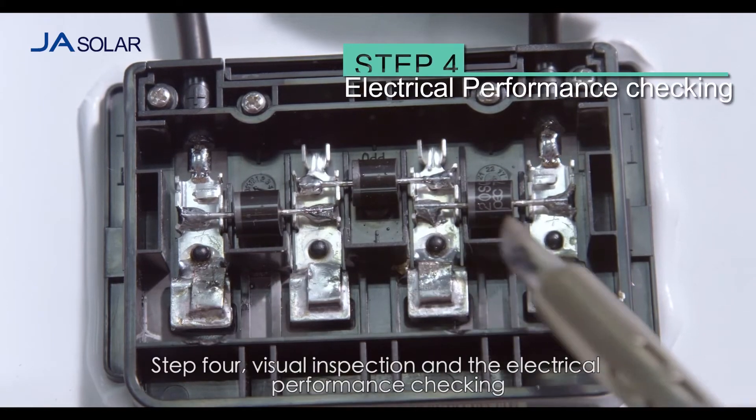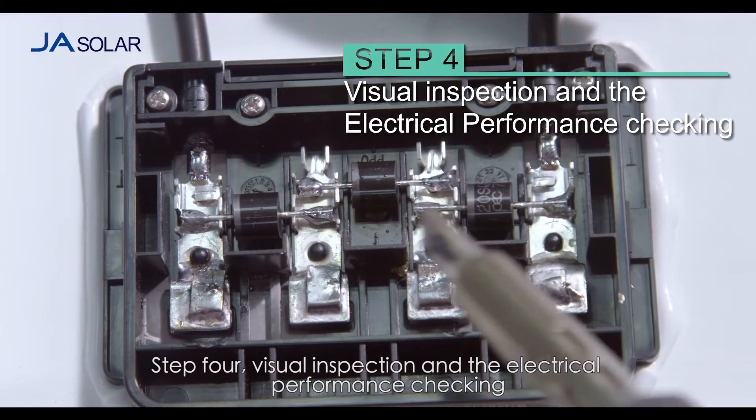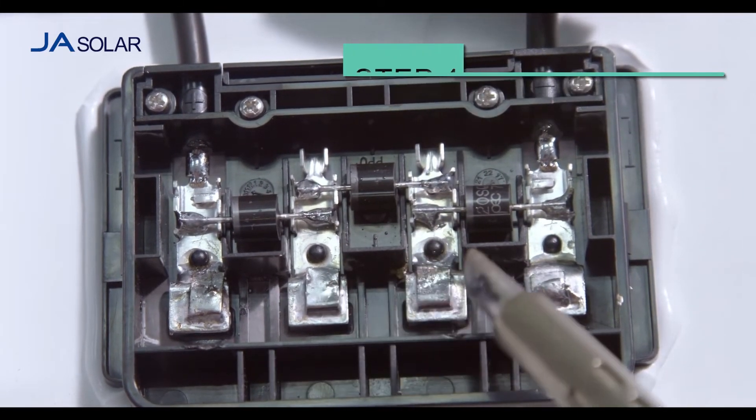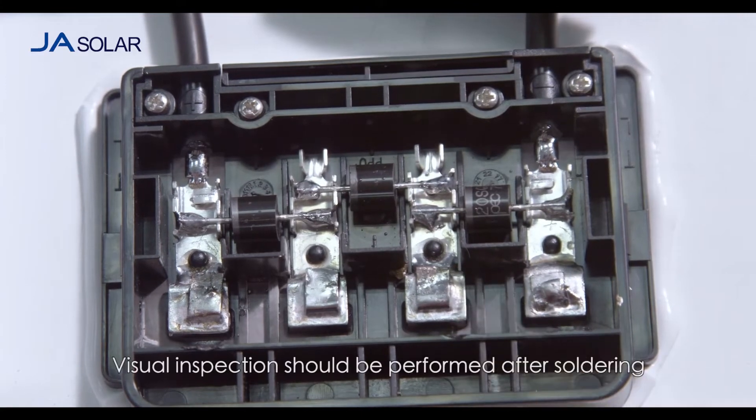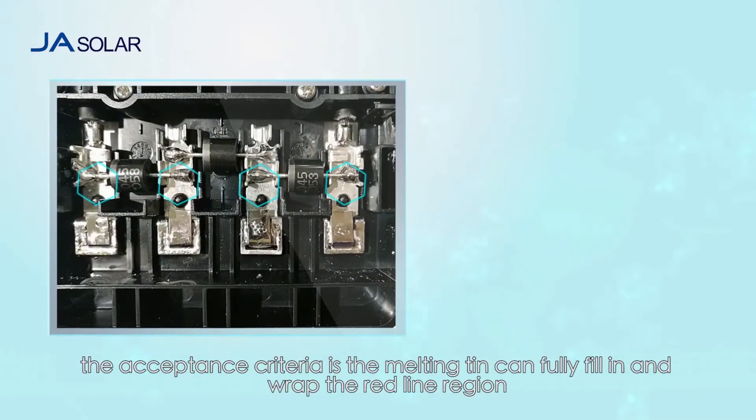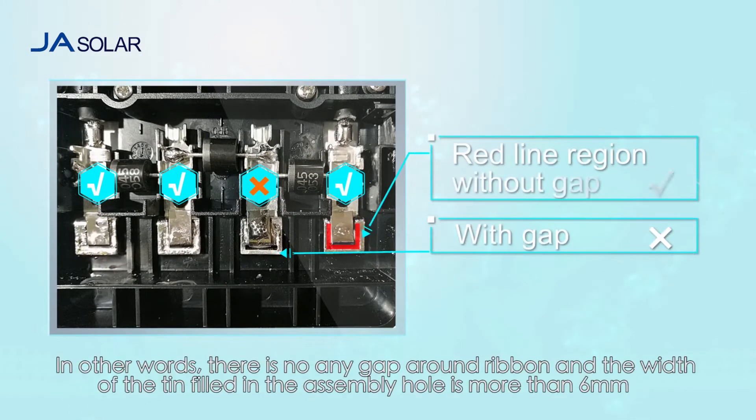Step 4: Visual inspection and electrical performance checking. Visual inspection should be performed after soldering. The acceptance criteria is the melting tin can fully fill in and wrap the red line region. In other words, there is no any gap around ribbon and the width of the tin filled in the assembly hole is more than 6 mm.